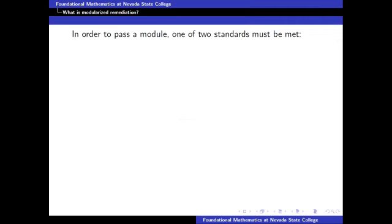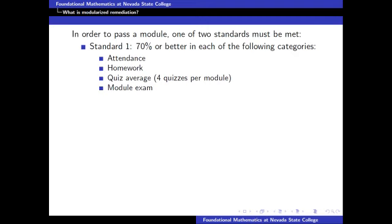In order to pass a module, one of two different standards must be met. The first standard is to receive 70 percent or better in each of the following categories: attendance, homework, quiz average, and module exam. The second standard is to receive an 80 percent or better on just the module exam.